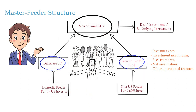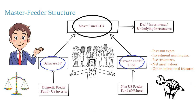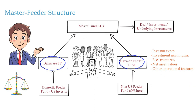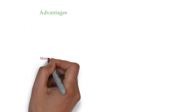In other words, a feeder fund is not tied to a particular master fund, but rather functions as its own legal entity — a partnership in its own right — that can invest in any number of master funds. The advantages of a master-feeder structure include the following.